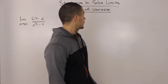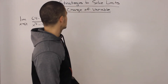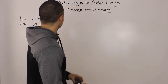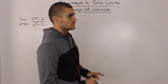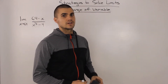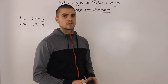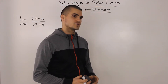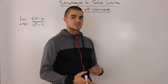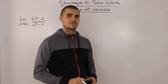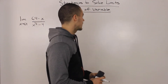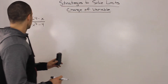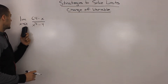Moving on with strategies to solve limits, we're going to be dealing with the change of variable strategy. This strategy, out of all the strategies in this chapter, is definitely the toughest one, so make sure you get a lot of practice with it. We're going to do three examples here, so take careful notes and do your best to follow along.